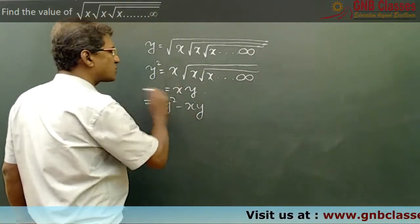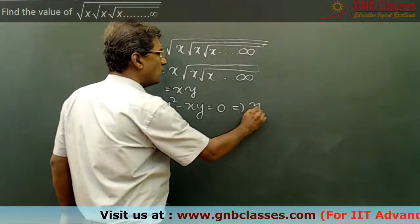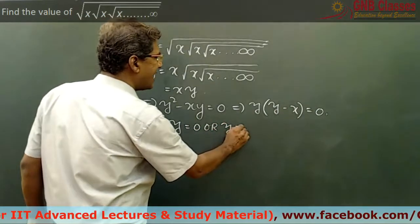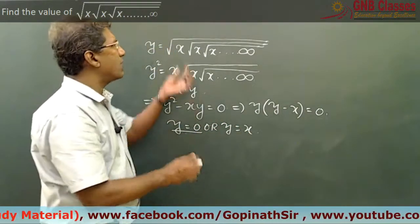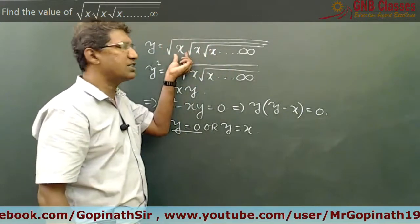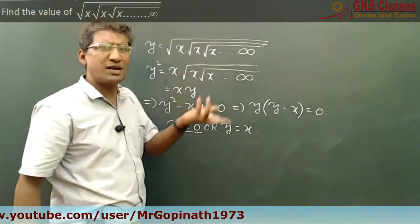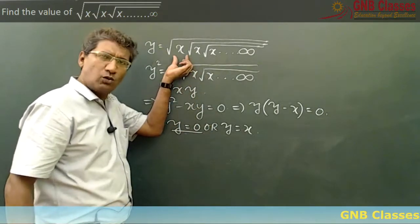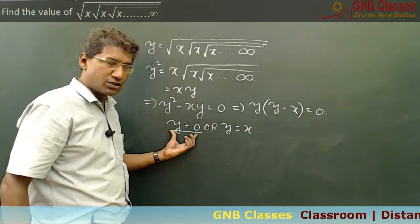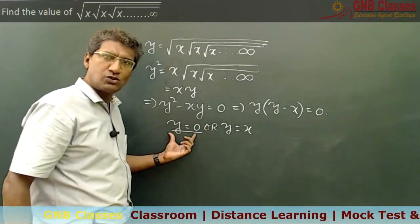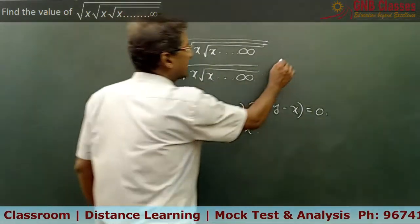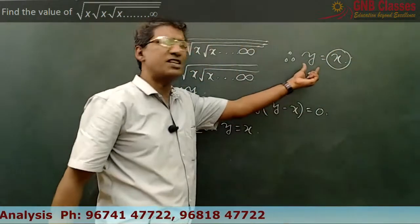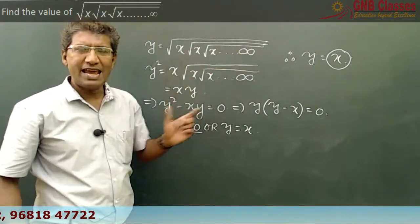So y squared minus xy equals 0. Taking y common, either y equals 0 or y equals x. Now y cannot be 0 because x is not 0 — if x were 0 the whole expression would be 0 trivially. So for x not equal to 0, y is not equal to 0, and therefore the value of this expression is nothing but x.